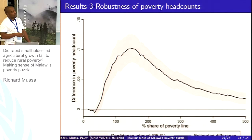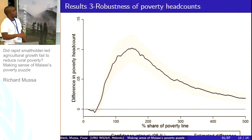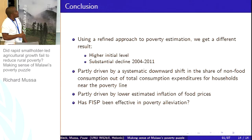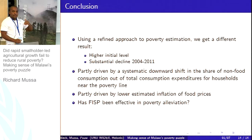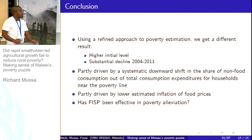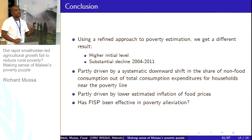Plotting poverty headcounts across all different poverty lines shows a decline in poverty whatever poverty line you choose, with declines mostly significant at the 95% confidence interval. In conclusion, the poverty decline we observe is driven by the shift in the non-food component and lower food inflation. Can we say the agricultural input subsidy was effective? Possibly — our results are consistent with what most people expected: that poverty should have declined given the subsidy's targeting of the agriculture sector, which is predominantly rural. Thank you.